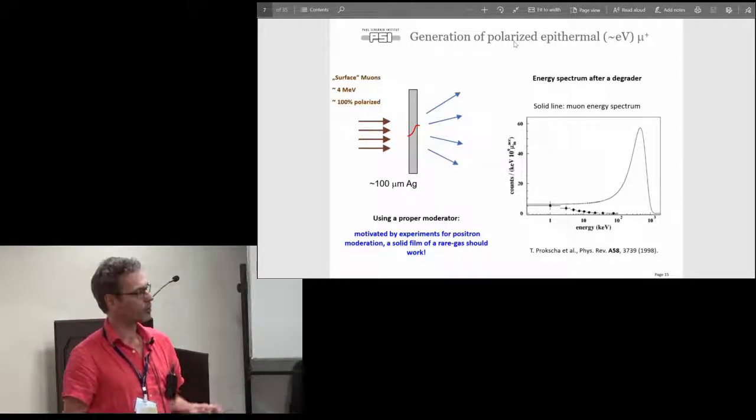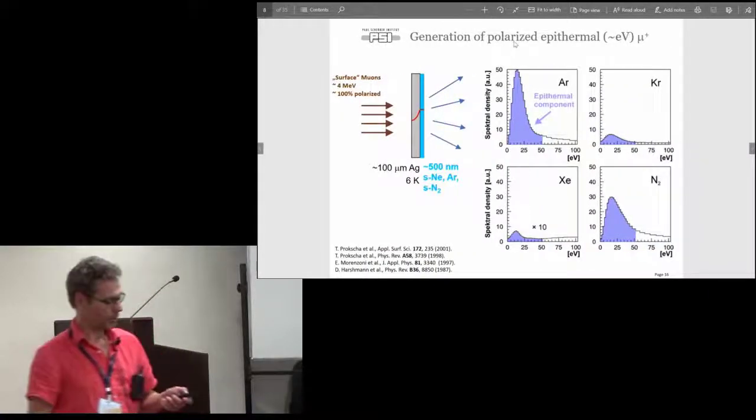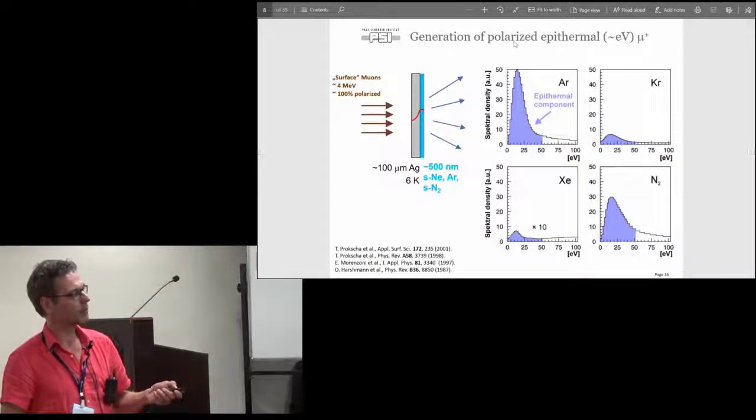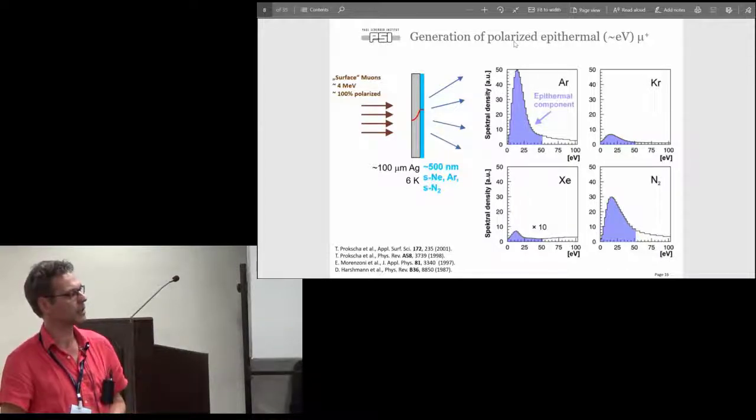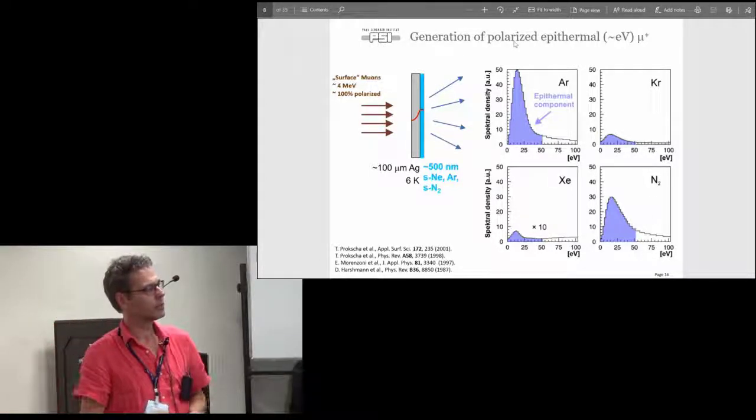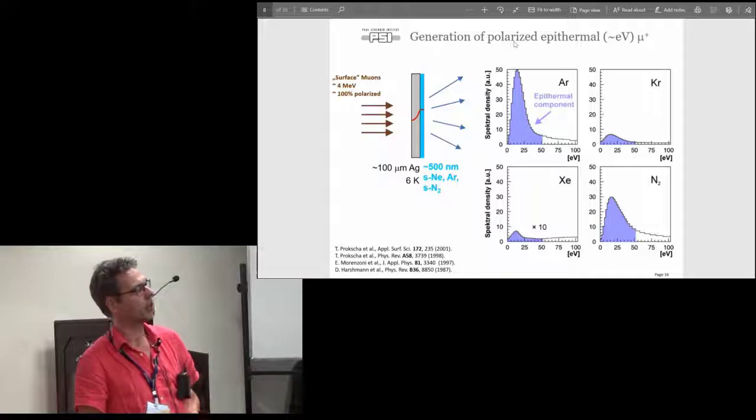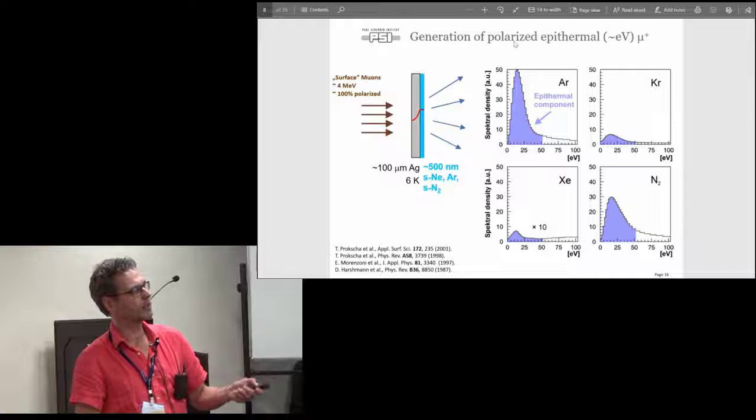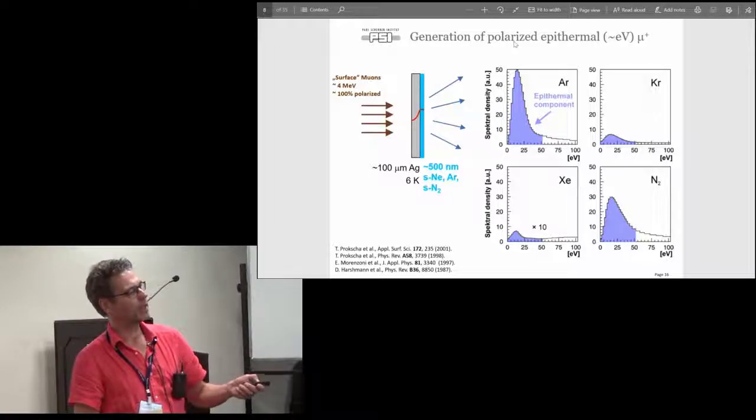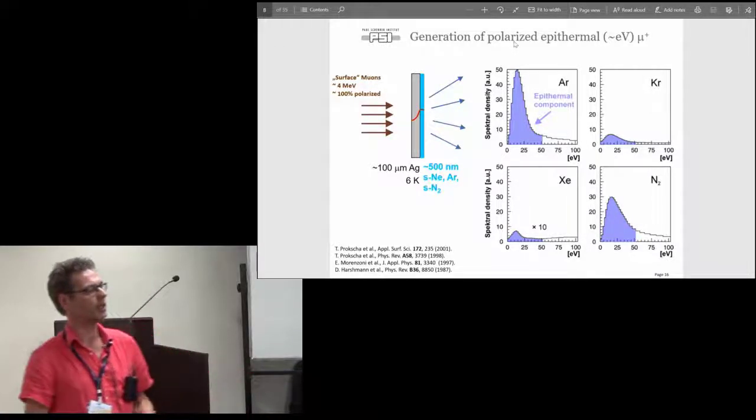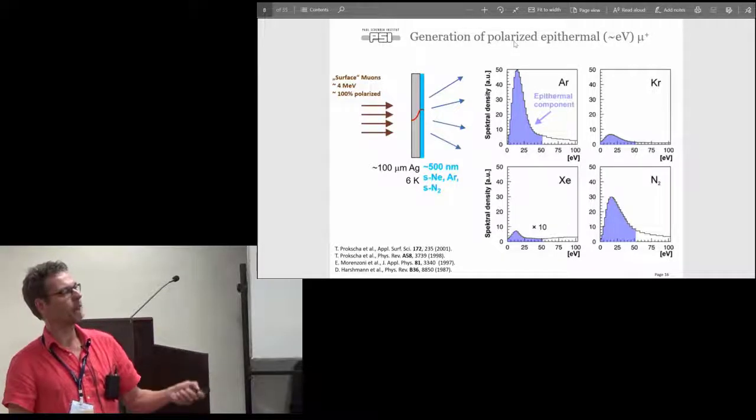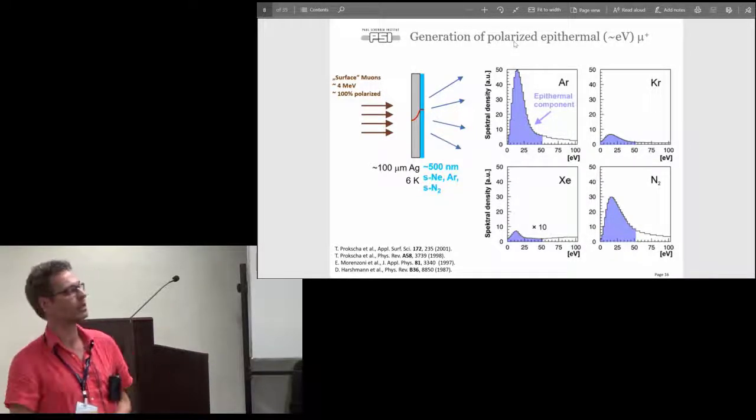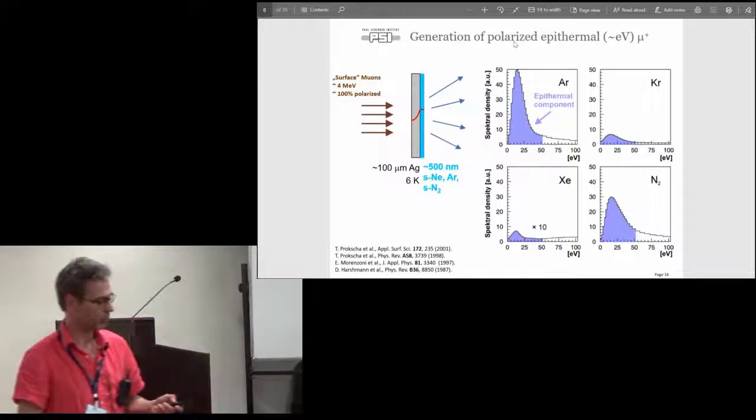Thanks to some ideas from positron moderation in the 1980s, there was the idea to try a solid rare gas film, and this is now what we are doing at PSI. We have a cold silver substrate, cool it down to 10 Kelvin or 6 Kelvin, and we deposit a few hundred nanometer thin layer of a solid argon or solid neon film. If you measure the energy spectrum of the particles coming out, you see this very nice peak in the spectrum at between 10, 20, 30 eV. We apply up to 20 kilovolts to this foil and re-accelerate them to the kiloelectron volt range.